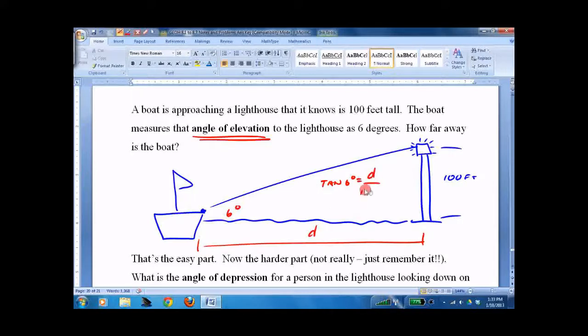D over 100. Some quick multiplication: D equals 100 tan of 6 degrees. Pull out the calculator. We get an ugly number - something's wrong with my calculator.